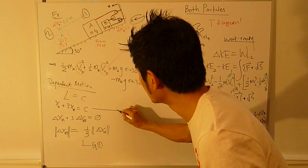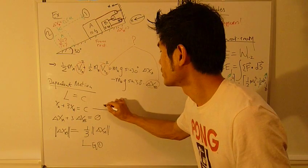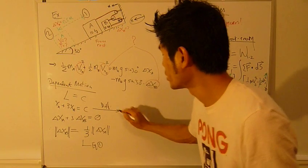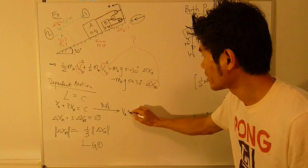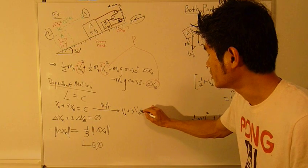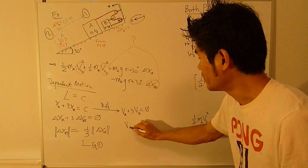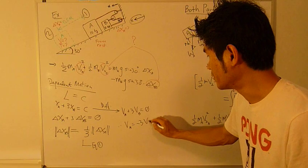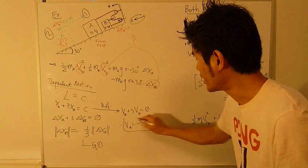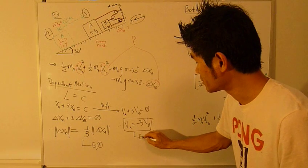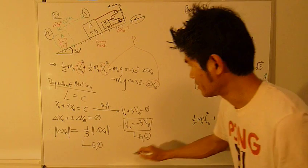The second extra equation will come from here. Take derivative, differentiate this equation, so it gives you VA plus 3VB equals 0. Therefore, VA equals negative 3 VB. This is my second equation, second extra equation.